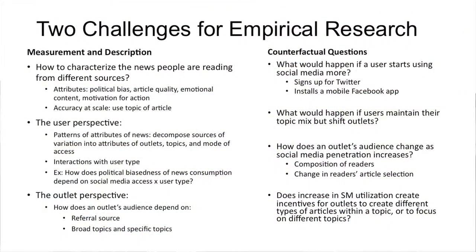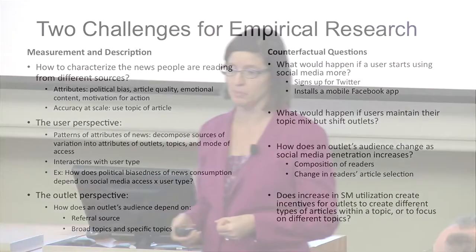There are two different kinds of challenges for empirical research. The first is measurement and description — we've spent years trying to characterize the news people are reading from different sources. What are the attributes of the news? Their political bias, article quality, emotional content, whether it has first-person narratives, whether it makes you want to go and do something. If we want to understand the equilibrium level of informativeness in society, it's important to characterize these more subtle attributes of articles, which are at the heart of economic policy implications.